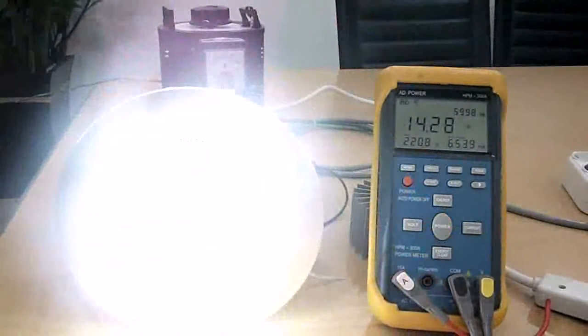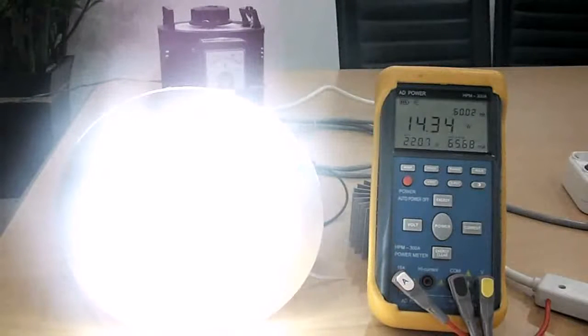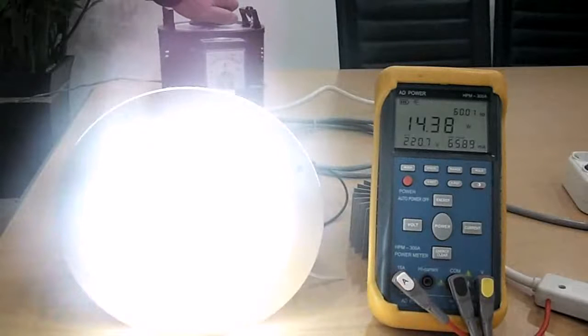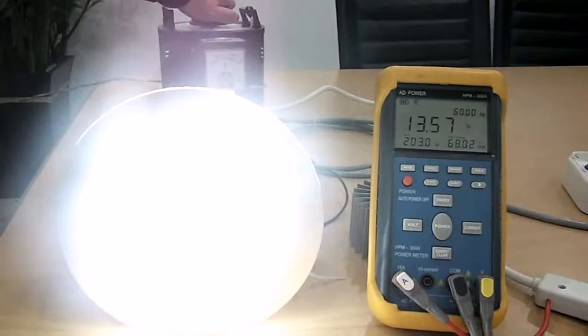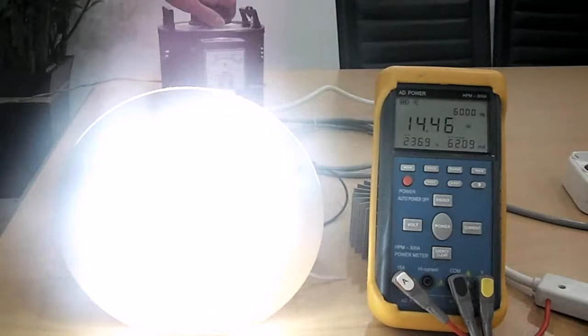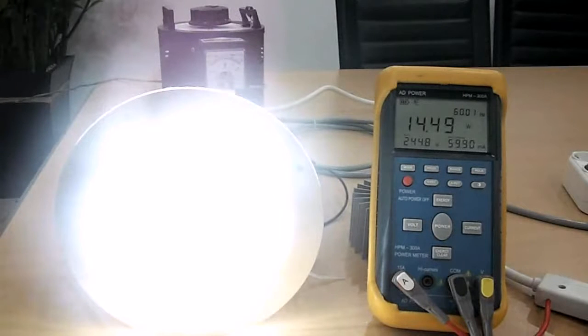Now we will try changing voltage from 220V to 240V to show power stability of our LED lamp. As you can see, minimal change of power.